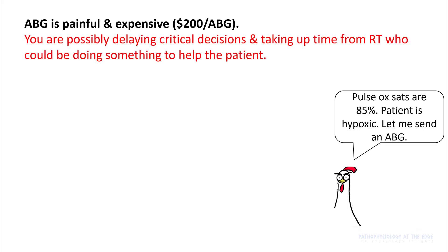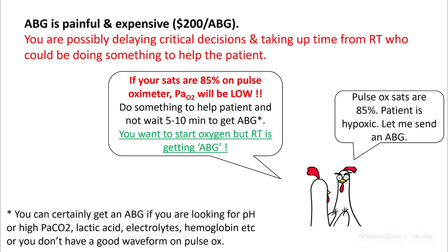ABG is also painful and expensive, and more importantly, you are possibly delaying critical decisions and using up time from the respiratory therapist who could be doing something to help the patient. For example, if pulse ox SaO2 is 85%, the patient is hypoxic and your reflex would be to get an ABG. However, understand that your PO2 will be low because your SaO2 is low — you're not getting any additional information about hypoxia from the ABG. You have to do something to help this patient and improve oxygen SaO2, not wait 5 to 10 minutes for an ABG while you've used up your respiratory therapist getting that blood gas.